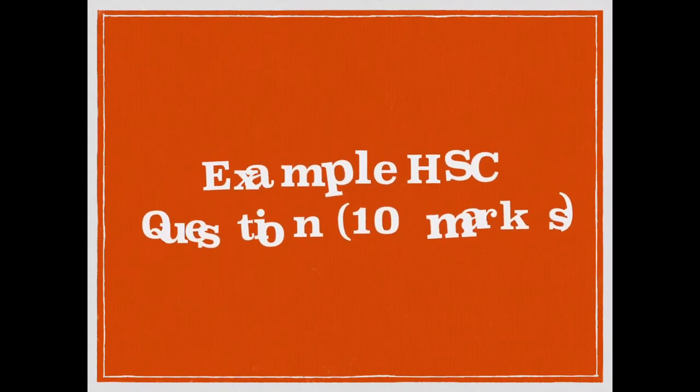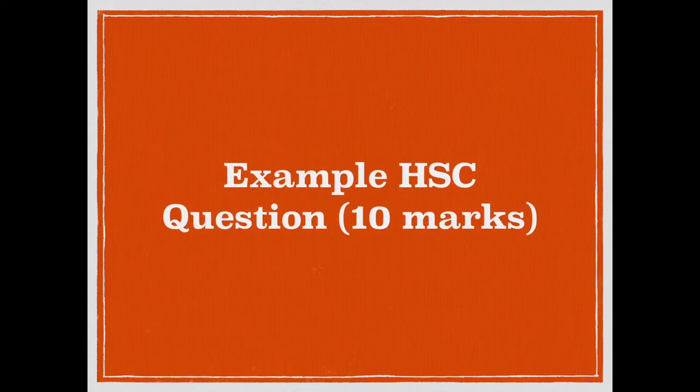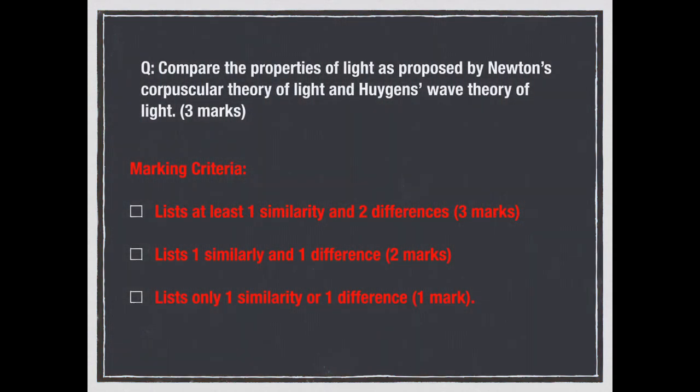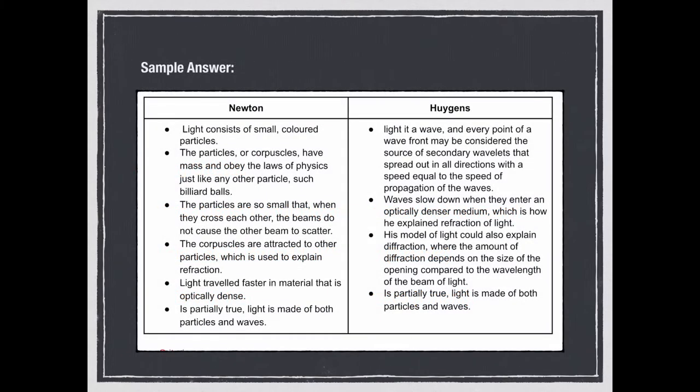This example would show the way a HSC question might include this concept, as well as the proper way to answer it and the marking criteria. The first question is, compare the properties of light as proposed by Newton's corpuscular theory of light and Huygens' wave theory of light, which is three marks. The marking criteria shown indicates what needs to be done to get the full three marks. As it is a compare question, both the similarities and differences between the properties must be listed. The sample answer is done in a table format, so the properties can be easily seen side by side. However, it is also okay to answer this question in a paragraph.